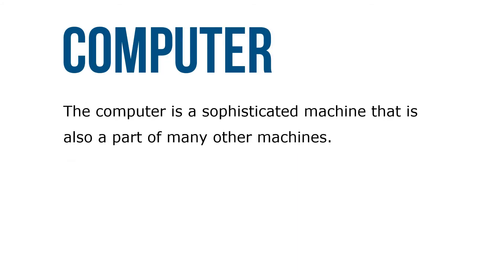The computer is a sophisticated machine that's also part of many other machines. Automation is the simplification or reduction of human effort required to do a job. Computers and other machines have allowed some jobs to be done by robots.